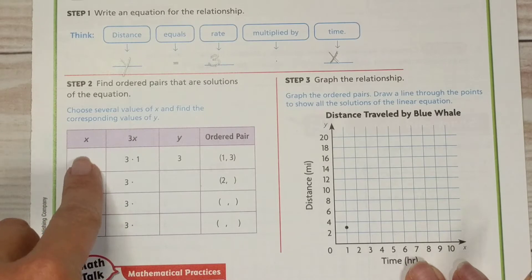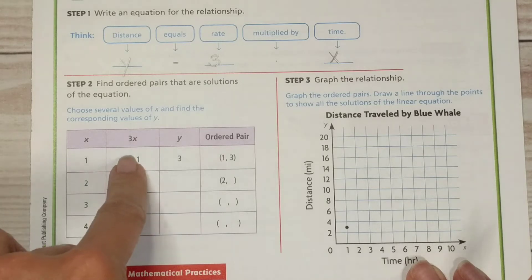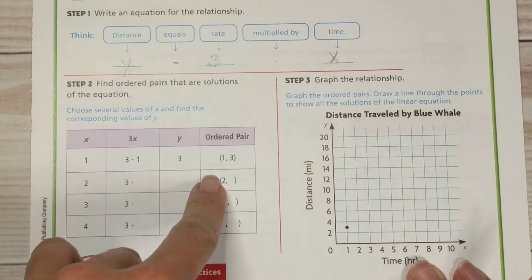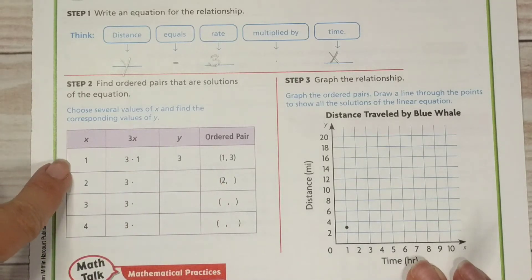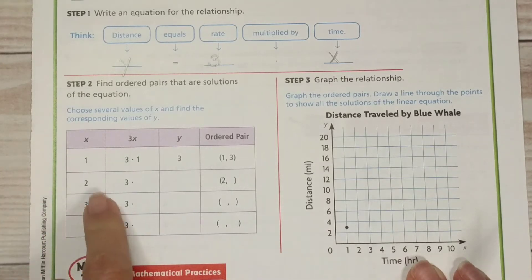Choose several values for x and find the corresponding values of y. Notice that they're using relatively simple, small numbers. You can put any number in here for x. You could put 100 in if you felt like it. But that makes the work more difficult later on. So typically, you're going to choose smaller numbers and make your life easier.